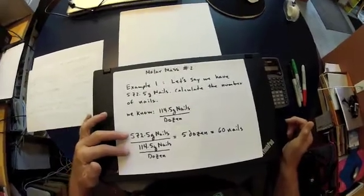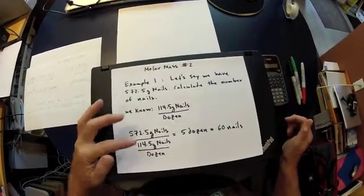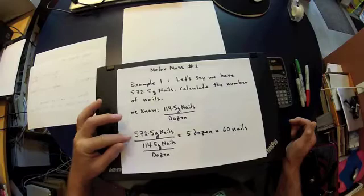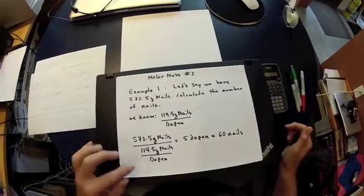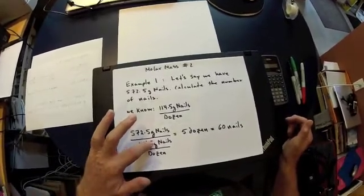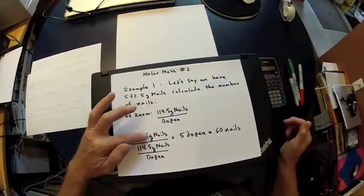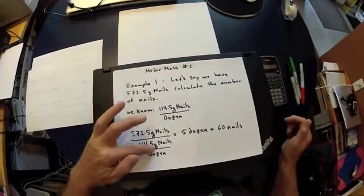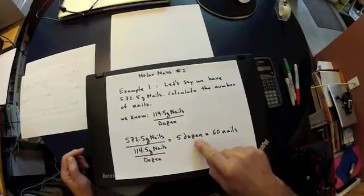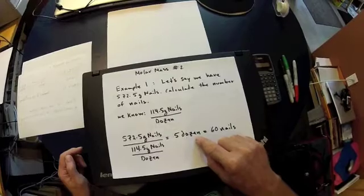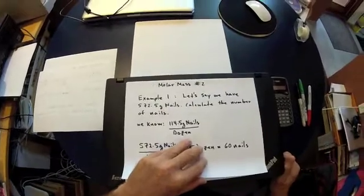Looking closely at the units: we have 572.5 grams of nails divided by a ratio with units of grams of nails per dozen. The grams-of-nails units cancel out, and we've solved for the unit 'dozen.' Since there are 12 nails in a dozen, 5 times 12 equals 60 — so we have 60 nails in 572.5 grams of nails.